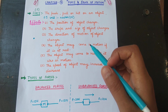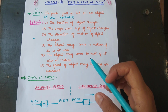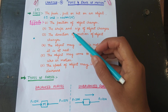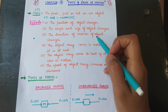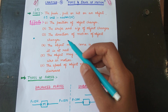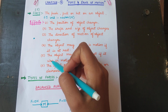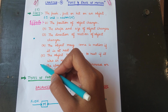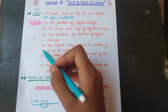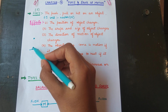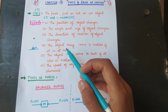The shape and size of an object may also change. For example, if we have a balloon filled with air and we apply force on it, it bursts — so the shape and size changes. Similarly, the direction of motion of an object also changes. If a cart wheel is moving in a straight line and we apply force in another direction, its direction of motion may change.